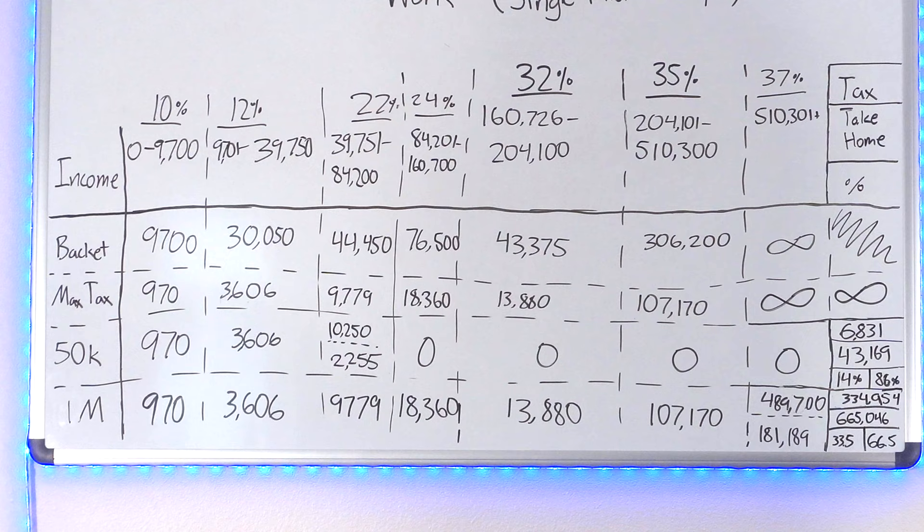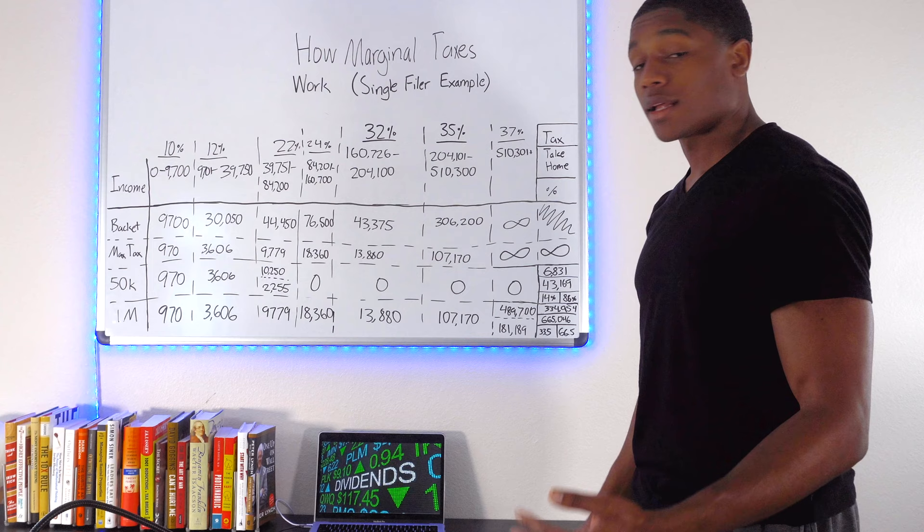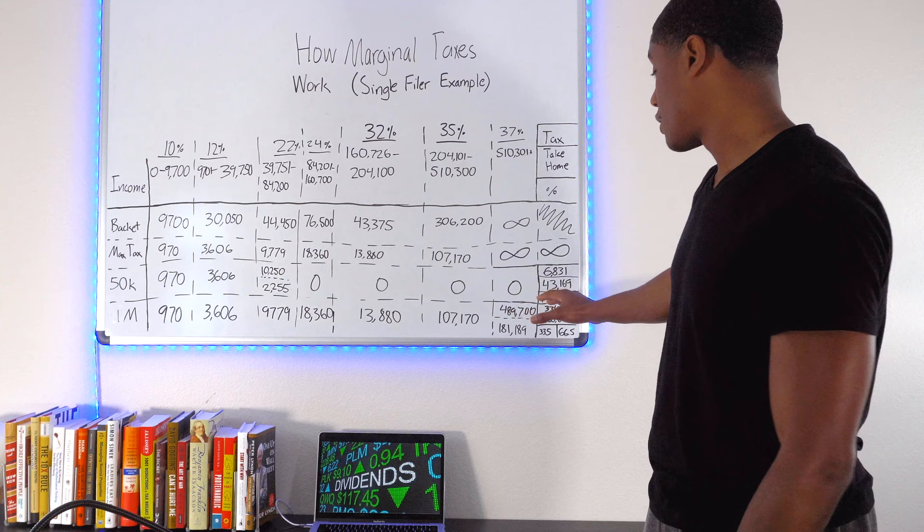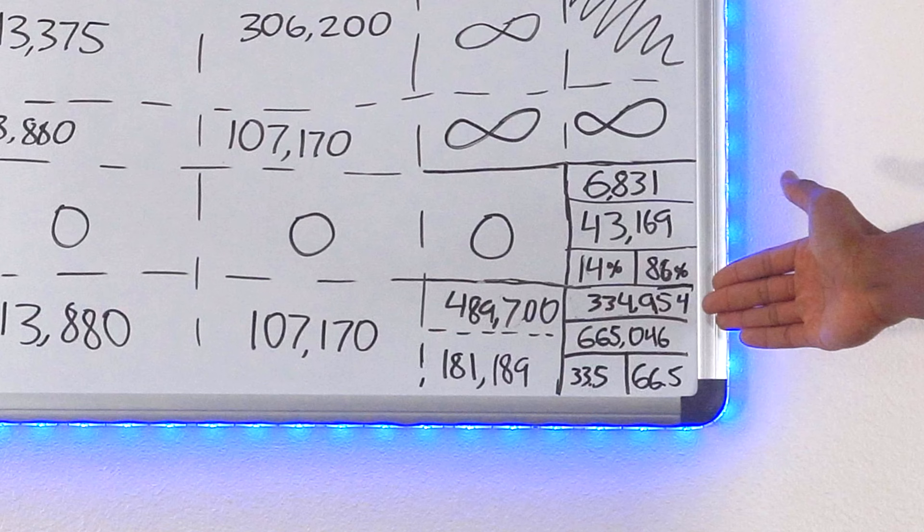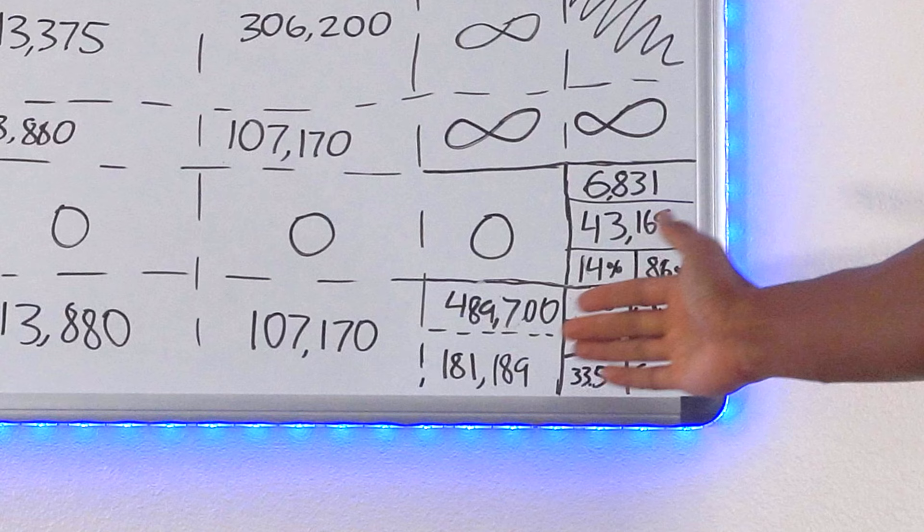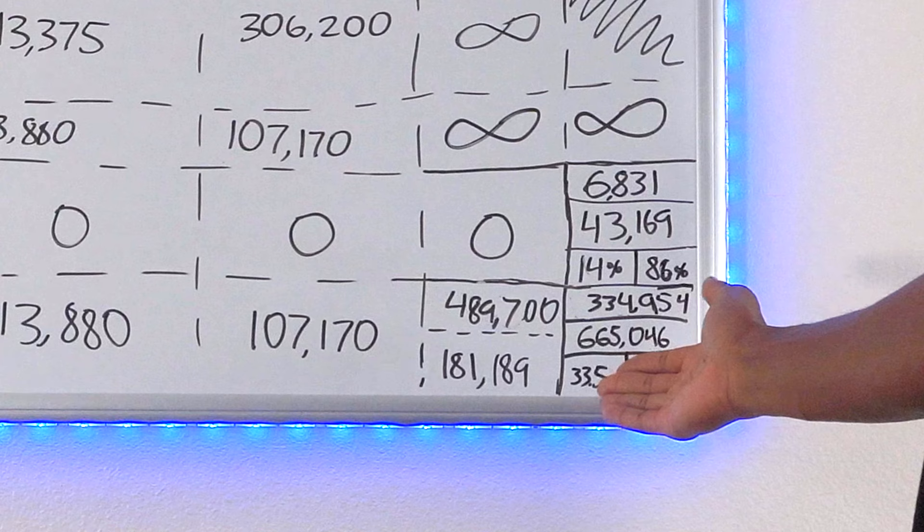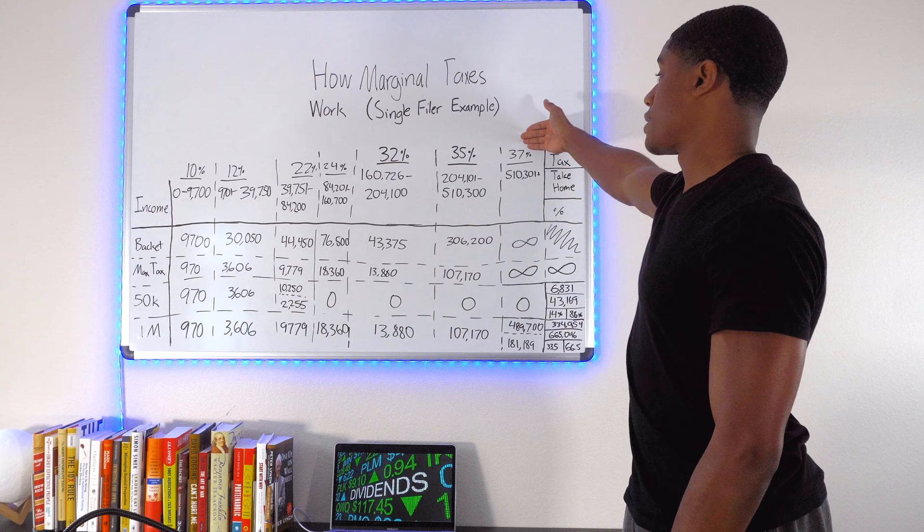If you add up all of these amounts that this million dollar earner is paying now, keep in mind, this is not taking into account state and local taxes, which if you're in States like California, man, this is a PG channel. So you're going to pay some taxes. But anyways, if you look at this amount, you're going to end up paying $334,954. If you are making this amount in just federal taxes, your take home pay is going to be $665,046. So that essentially brings your tax rate over here to 33.5%. And as you can see, that is not 37%.